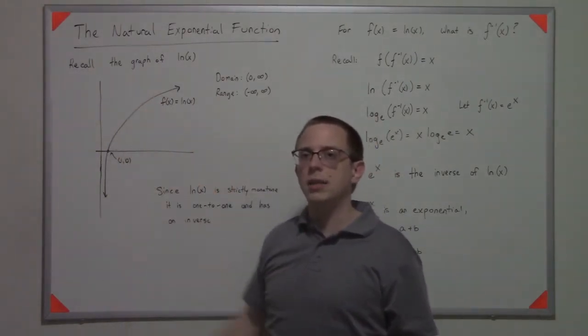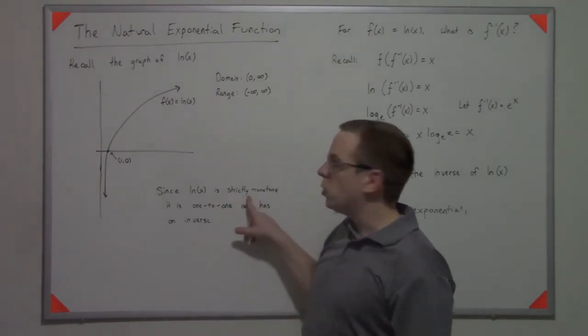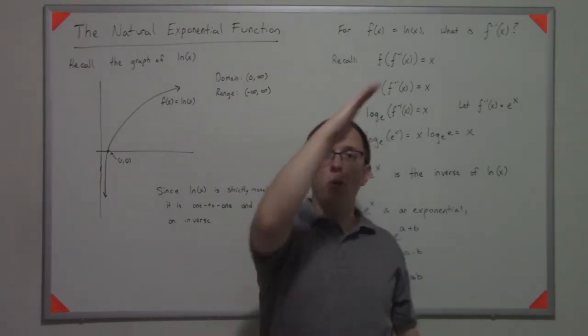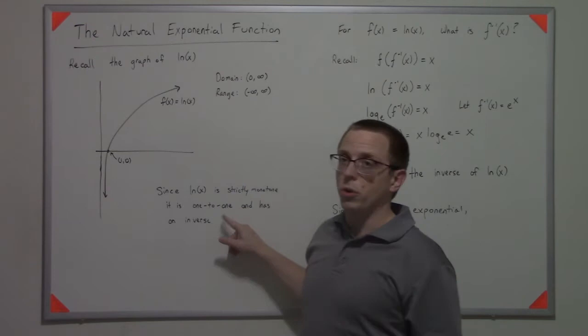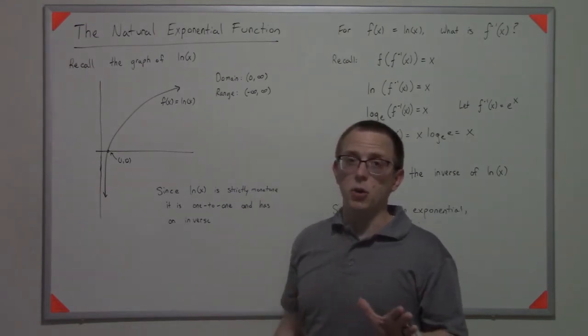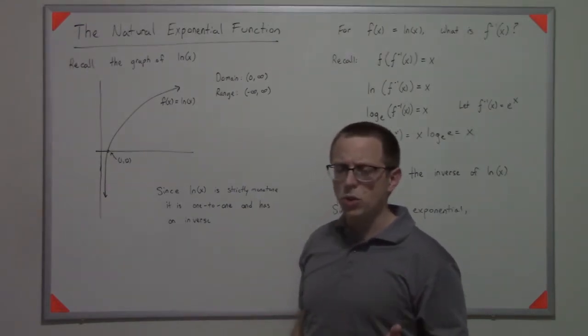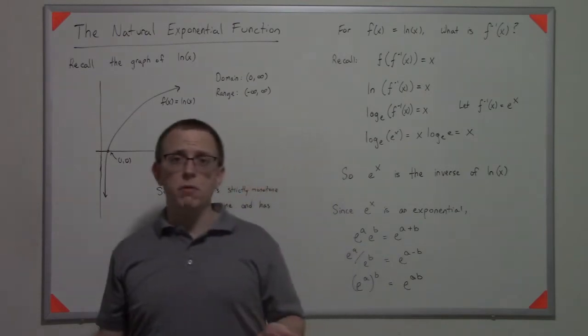It would pass that horizontal line test. So it's strictly monotone, so it's just always increasing, and it's one to one. And that's on its entire domain. So as a result, we have a guaranteed inverse of this function.